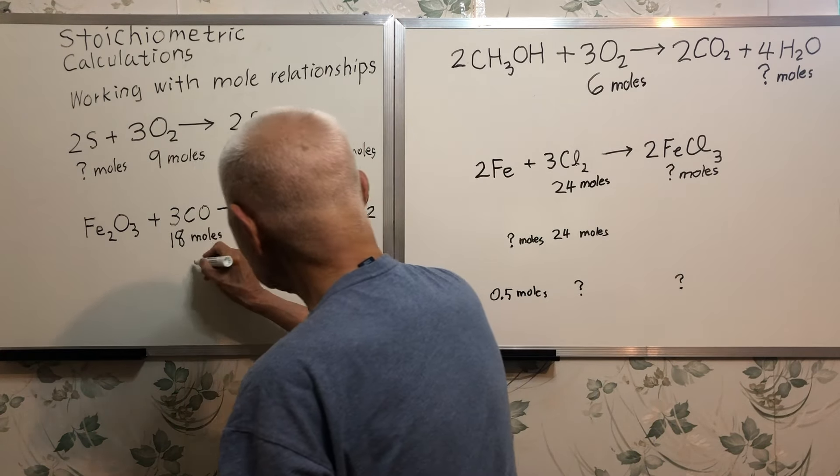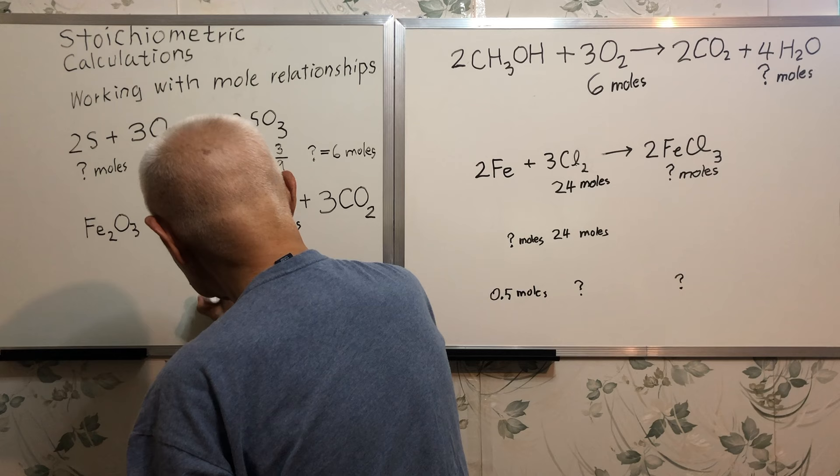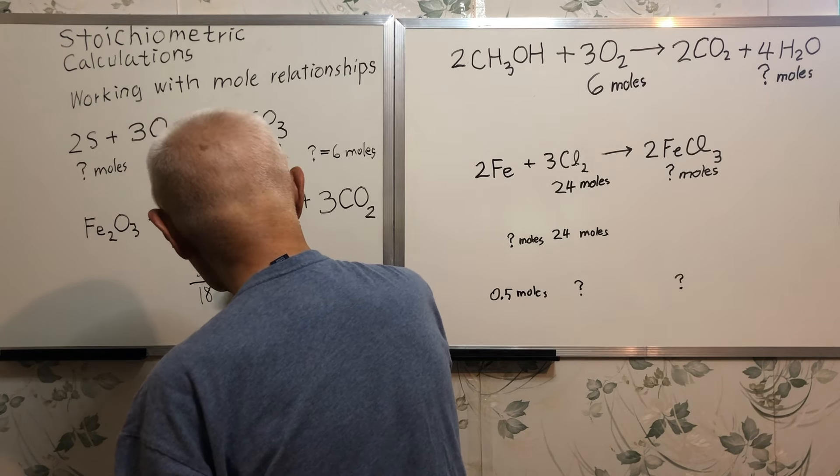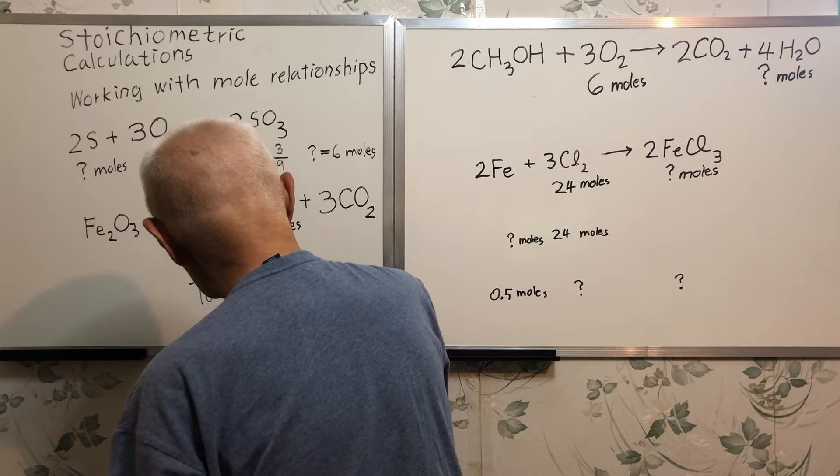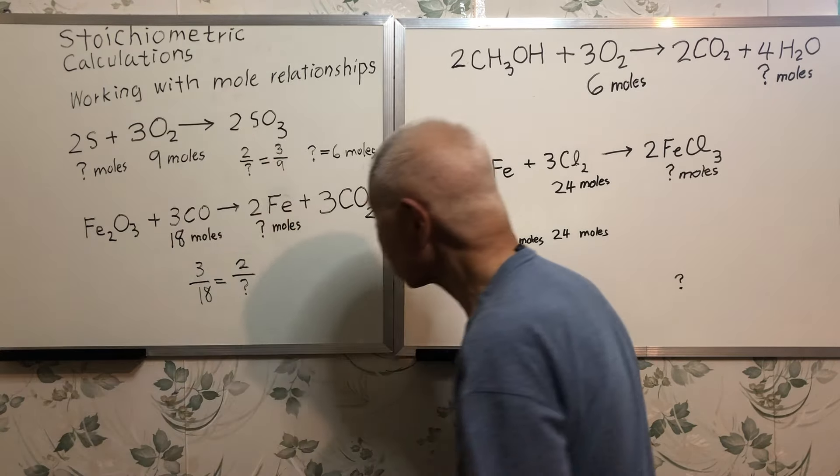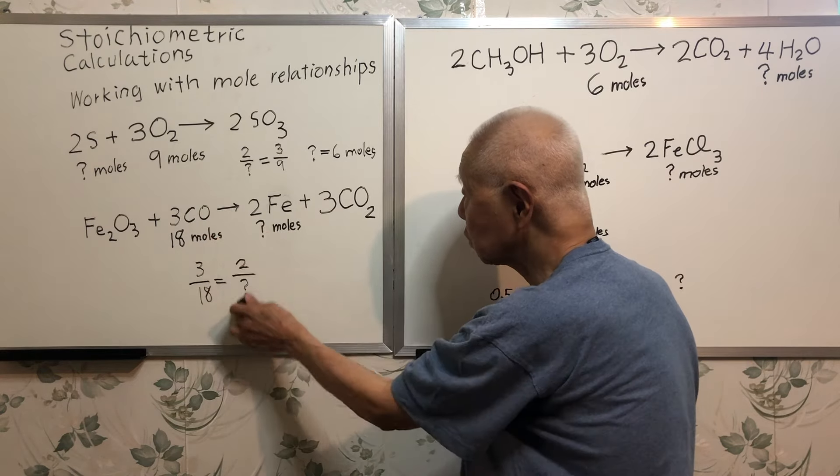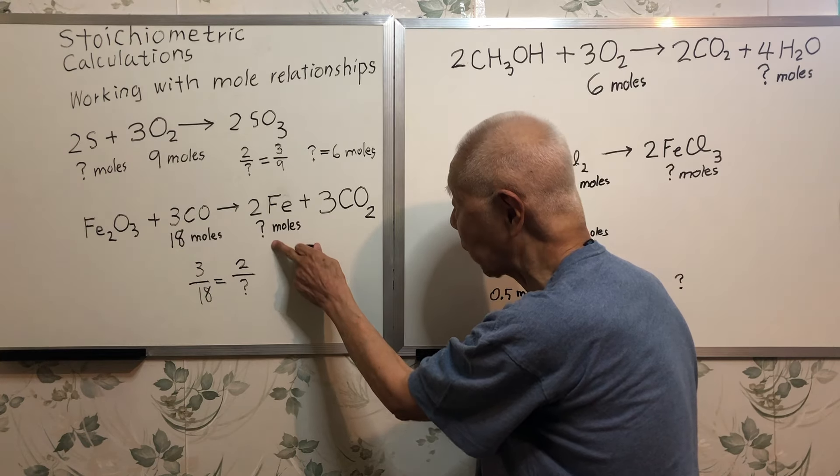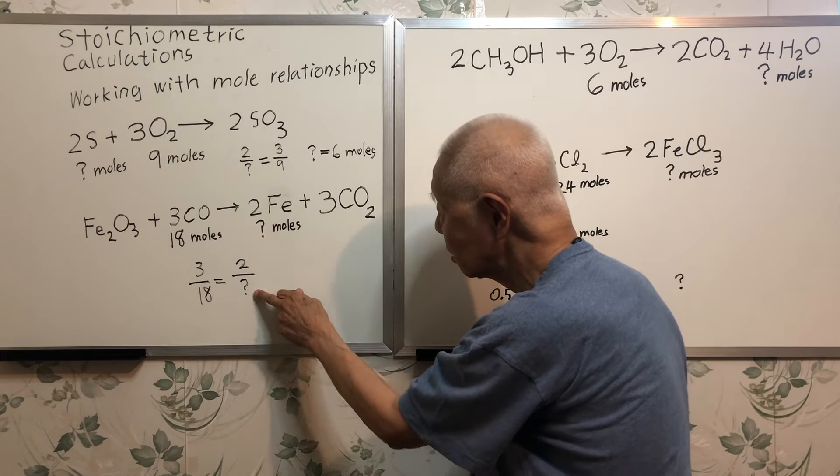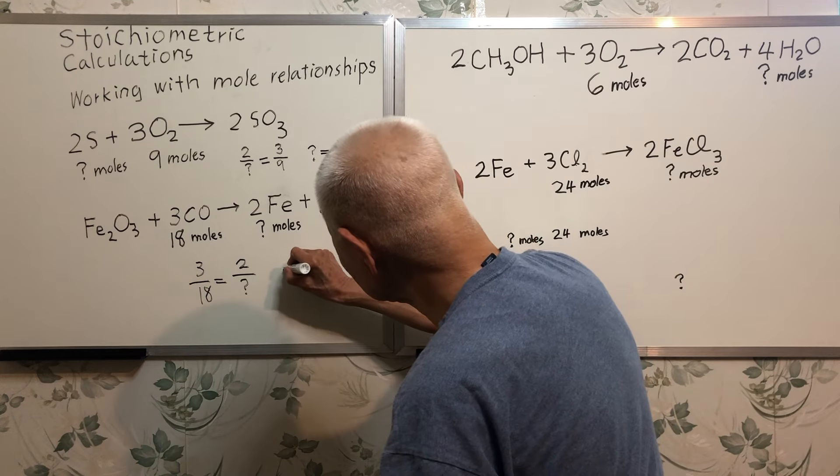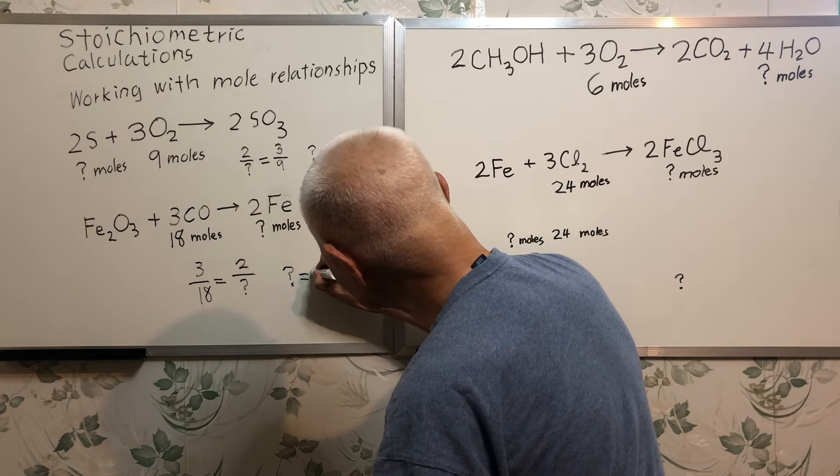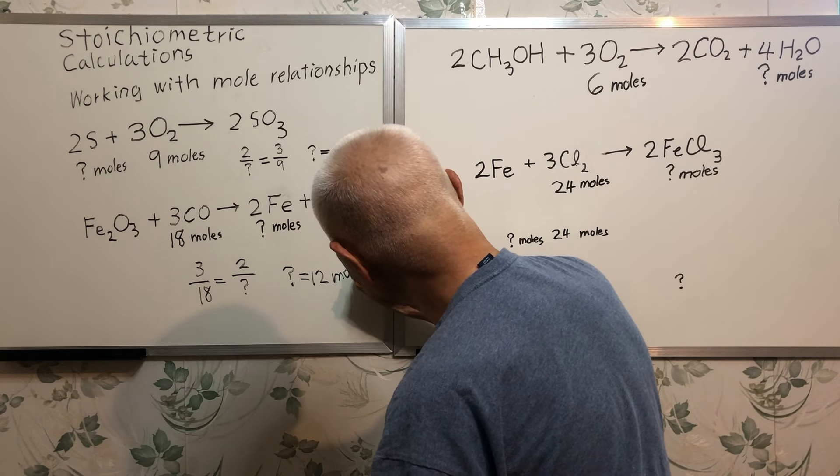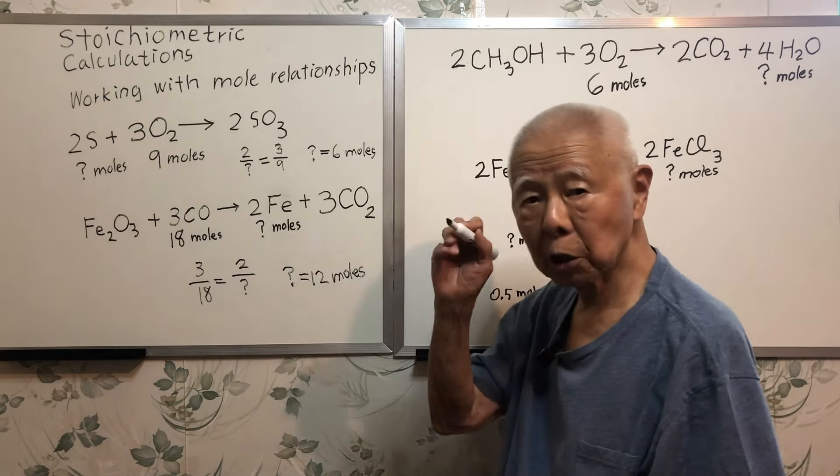Ratio. 3 over 18 is equal to 2 over what? 2 over the question mark. So what is the question mark? 12. It's just a ratio.